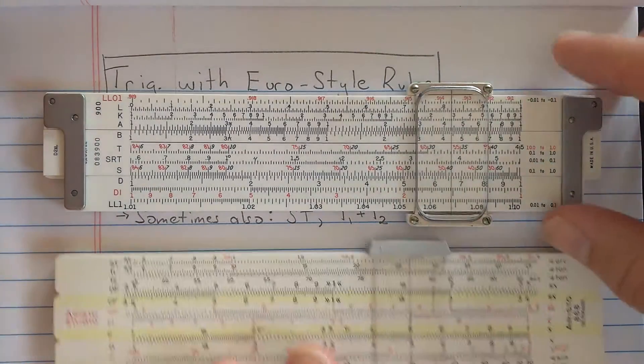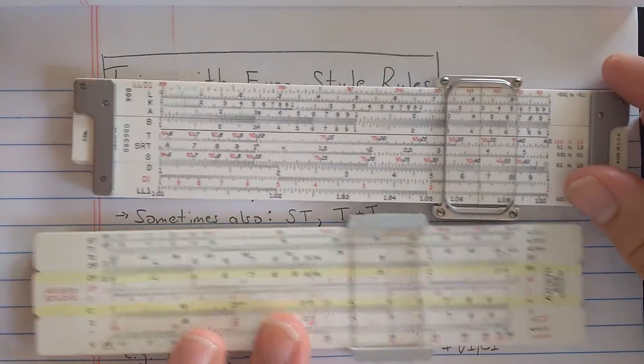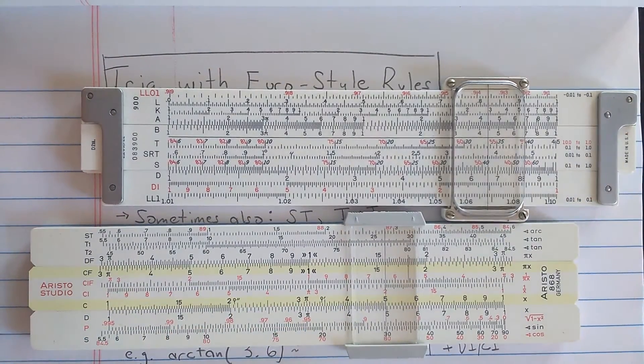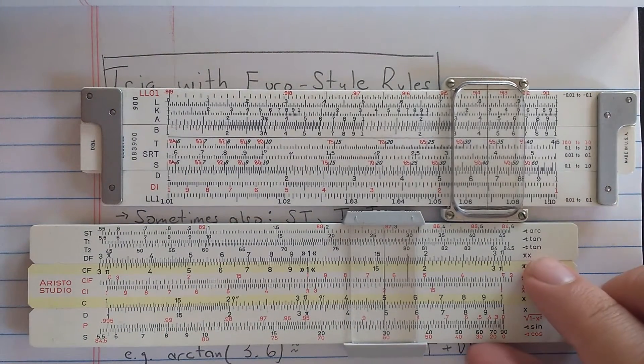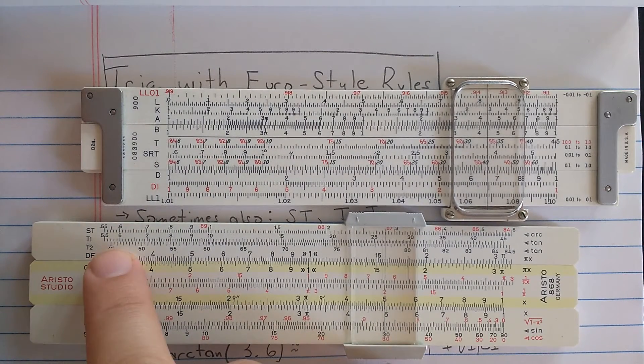Now, the question is, what if you have a slide rule of a Euro type? So here is an Aristo Studio slide rule. You can see the difference here in the trigonometry is that the trigonometry is on the base.